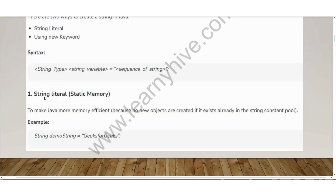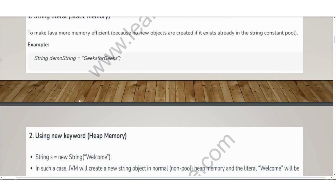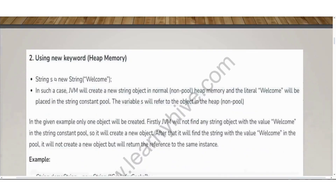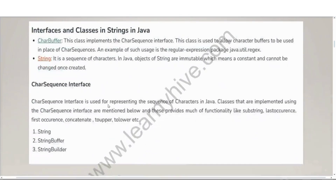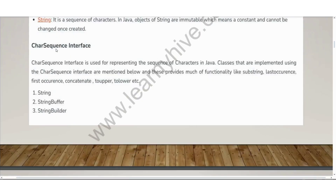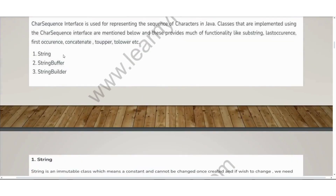The first way of creating a String is using a String literal, which uses static memory. The second way is using the new keyword, which uses heap memory. You should provide examples for both types. For interfaces and classes in strings in Java, you have to explain the CharSequence interface, under which you have String, StringBuffer, and StringBuilder.